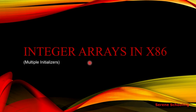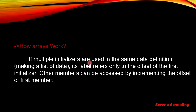We will learn about integer arrays today in assembly language. Arrays are also called multiple initializers. Arrays in assembly work similar to any other high-level language. If multiple initializers are used in the same data definition, its label refers only to the offset of the first initializer. Other members can be accessed by incrementing the offset of the first member.